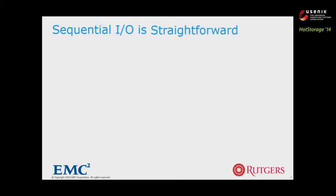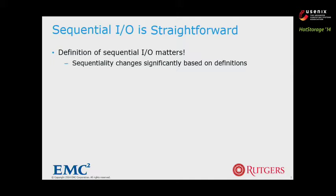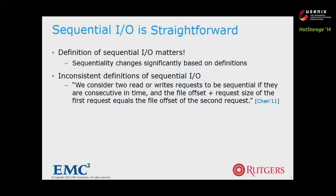Many people think they know what sequential I/O is — it sounds pretty straightforward — but as we will show in the later part of the talk, sequential I/O can change significantly depending on how you define it. Let us look at how sequential I/O is used in the literature. One example from a SOSP paper says: we consider two read or write requests to be sequential if they are consecutive in time, and the file offset plus the request size of the first request equals the file offset of the second request.